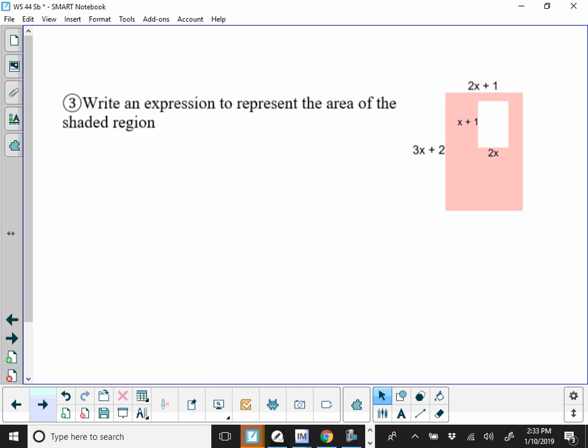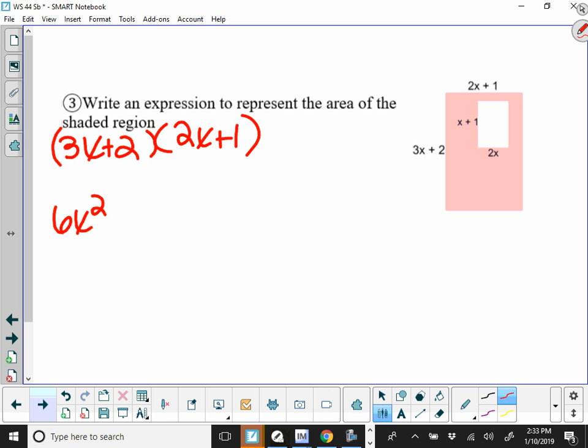All right, number three is area of a shaded region, so here we subtract. We're going to do the area of the outside first, so that's 3x plus 2 times 2x plus 1, which is going to give us 6x squared plus 3x plus 4x, which is 7x plus 2.